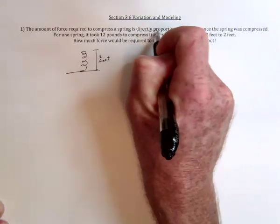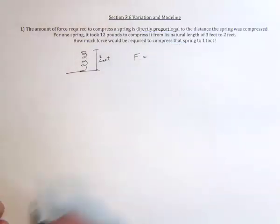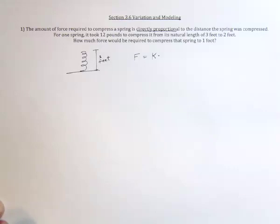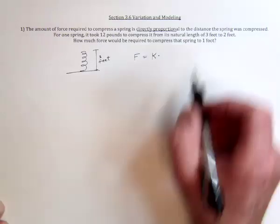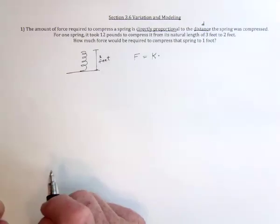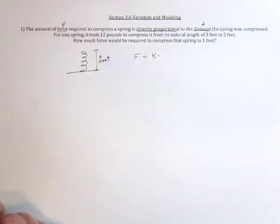Then the amount of force required to compress the spring, I'll just use F for that, is directly proportional. So it's equal to a constant times whatever comes next. And that's the distance that the spring was compressed. So I'll just use a capital F for force, and D for the distance that it was compressed.